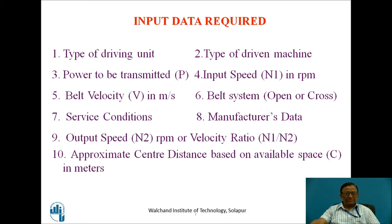For designing the V-Belt, we require input data consisting of: type of driving unit, type of driven machine, power to be transmitted, input speed, belt velocity, belt system (either open or cross), service conditions, manufacturer's data available as standard charts, output speed, and approximate center distance. These are the data we have to collect before we start designing.